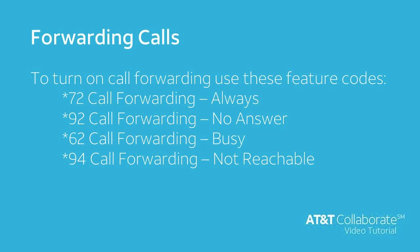The feature code for call forwarding always is star 72. This option will forward all calls to the number you've designated. The feature code for call forwarding no answer is star 92. This option will forward any unanswered calls.